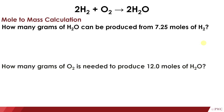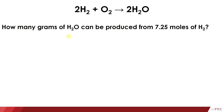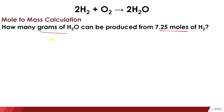Let's have another set of questions. How many grams of H₂O can be produced from 7.25 moles of H₂? Here, the given is the number of moles of one substance, and we're going to determine the grams of another substance — so this is a mole-to-mass calculation.